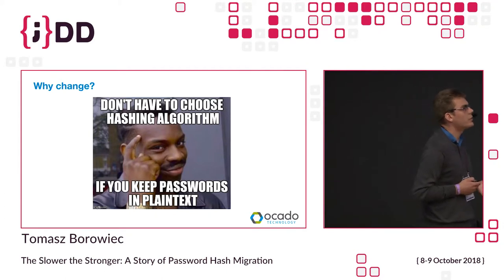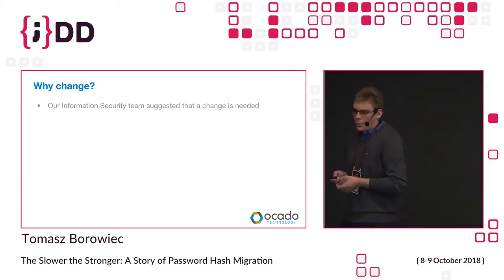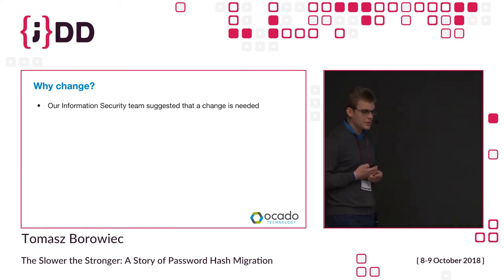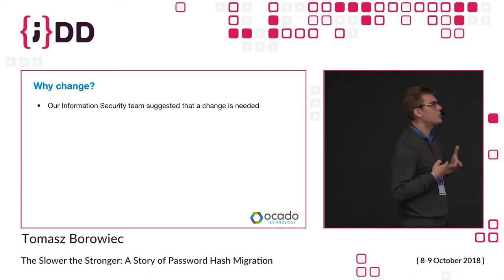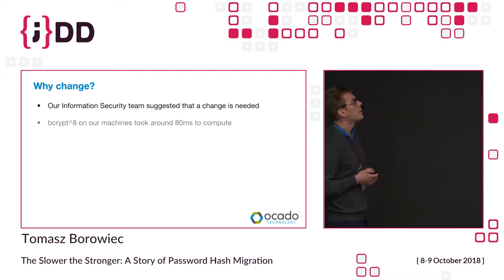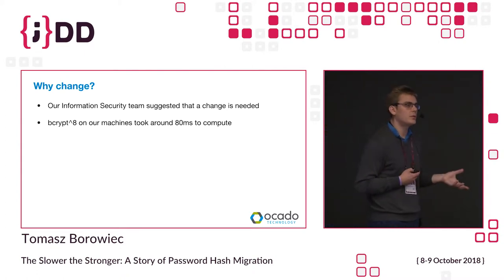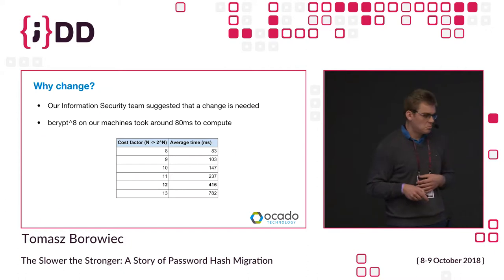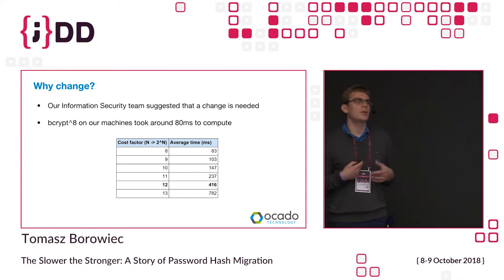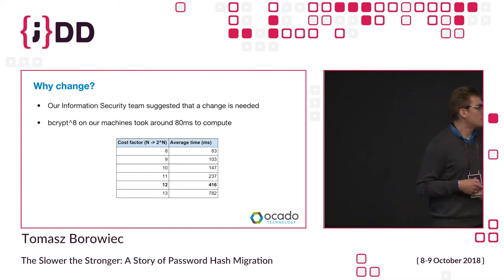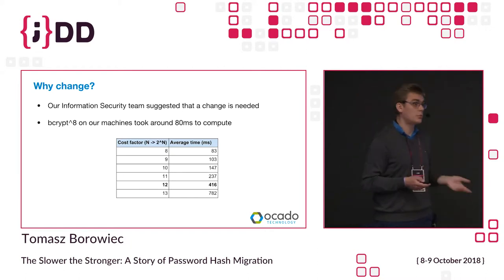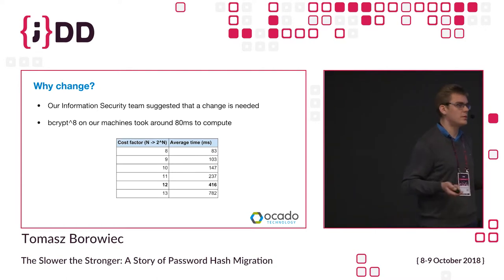So why did we decide to change, given everything seemed fine? We have an information security team looking after our security, and they asked what we used and whether it needed updating. We dug in and found that bcrypt with a cost factor of 8 took 80 milliseconds to compute on our machines — pretty fast. We did some tests and found we could easily go with cost factor 12, which takes less than half a second — shouldn't negatively impact user experience, but gives us a stronger hash.